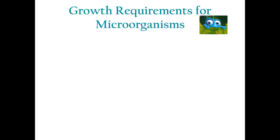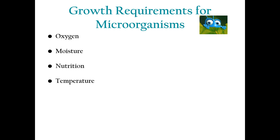Now let's talk about growth requirements for microorganisms. First, oxygen: some microorganisms, like aerobic bacteria, need oxygen to survive and grow, while others, called anaerobic bacteria, thrive in its absence. Second, moisture: microorganisms require a moist environment to multiply, which is why proper drying and disinfection are critical. Third, nutrition: microorganisms need nutrients such as sugars and proteins to grow. Fourth, temperature: most pathogens grow best at body temperature, around 37°C or 98.6°F, making the human body an ideal host. Fifth, darkness: many microorganisms thrive in dark environments, so keeping areas clean and well lit can help prevent their growth.